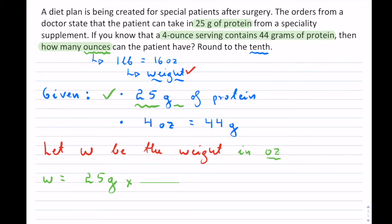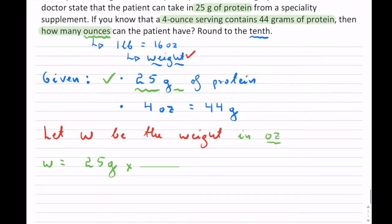So I don't want to have grams, but I do know that this supplement has 44 grams. And notice I have grams on top, so I will put grams at the bottom. It is like unit cancellations. So this will be 44 grams at the bottom, and then 4 ounces on top. And those are the only givens that I have. And notice what happens is that the grams cancel off, and all you're left with is ounces, which is exactly what we wanted.